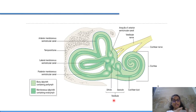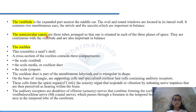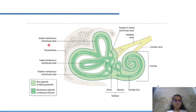This is the vestibule — an extension of the middle ear — with the utricle and saccule playing a very important role in balance. Now the semicircular canals — these are three tubes arranged so that one is situated in each of the three planes of space. They are continuous with the vestibule and are also important in balance. We have the anterior, lateral, and posterior membranous semicircular canals.